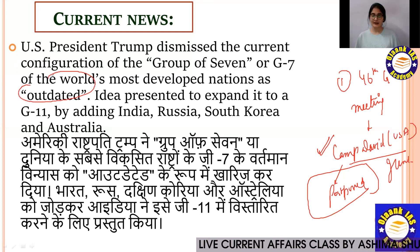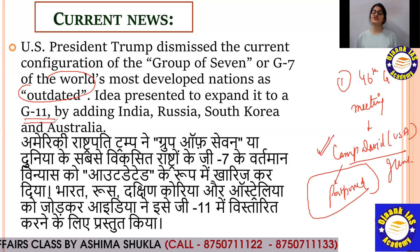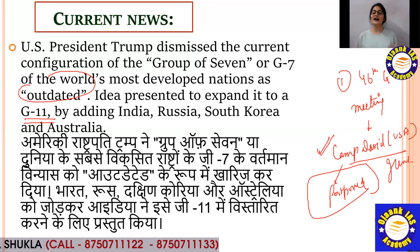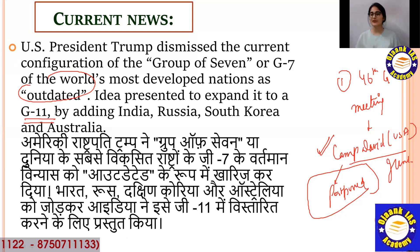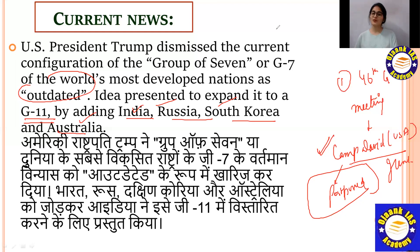Since Trump called G7 outdated, the idea has been presented to expand it to G11. The proposal has come from the United States, which currently holds the G7 presidency. Four countries should be added: India, Russia, South Korea, and Australia. These four countries have been proposed to join G7, making it G11.